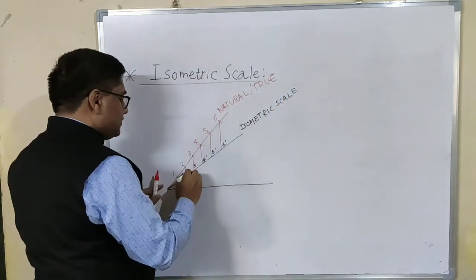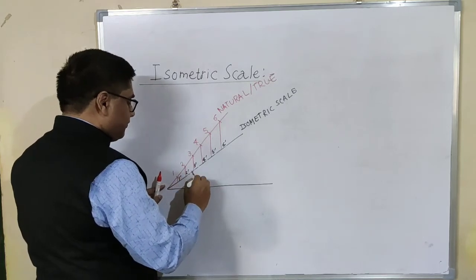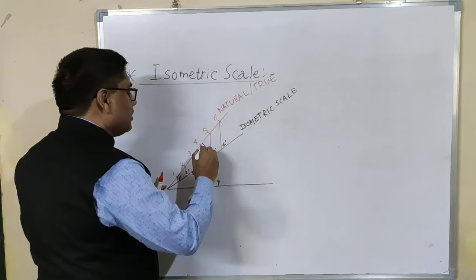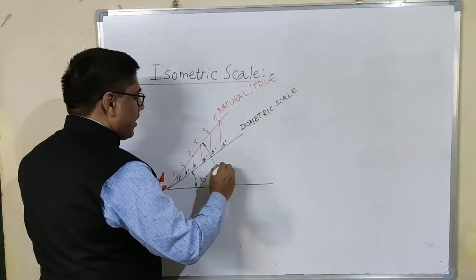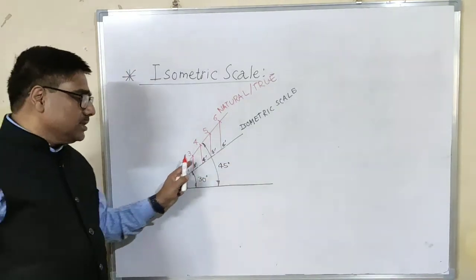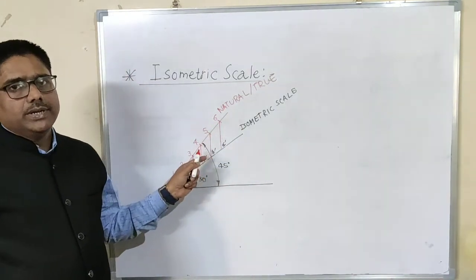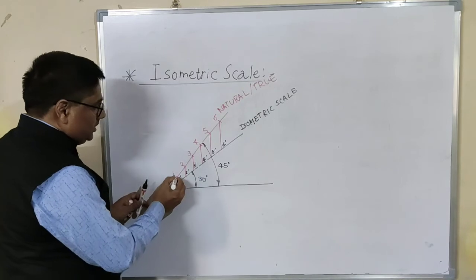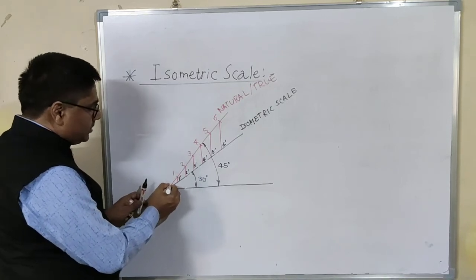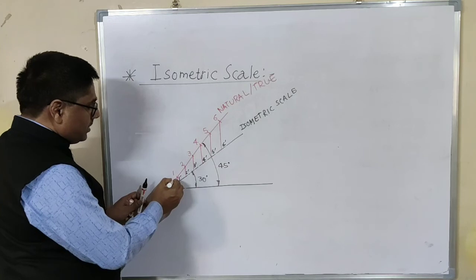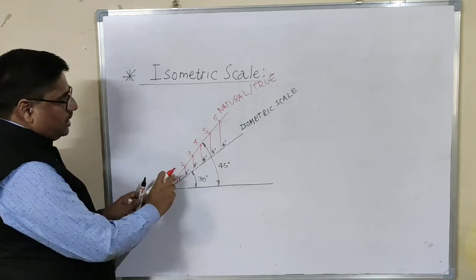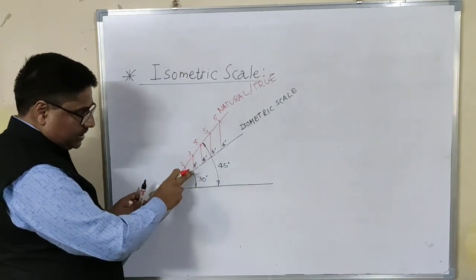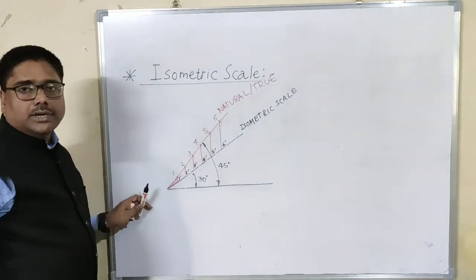This angle is 30 degrees and this angle is 45 degrees. For some odd dimensions like 63, 57 something, we can go for subdivisions also. You can divide this first segment into 10 number of equal parts, and the corresponding dimension can be transferred from this isometric scale to the isometric projection.